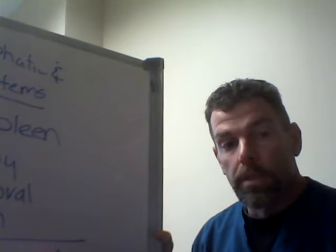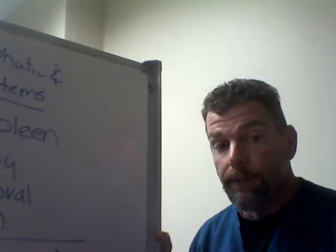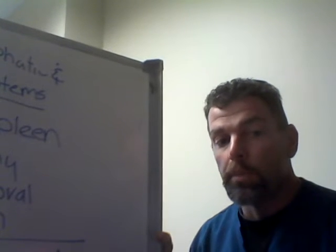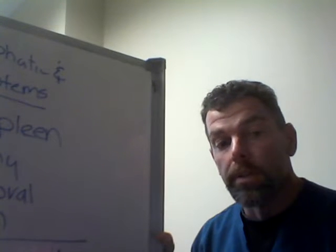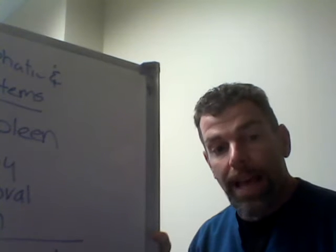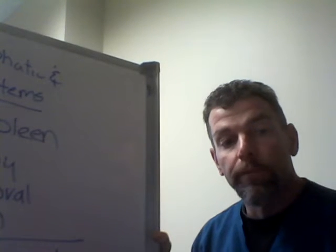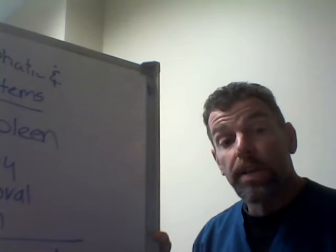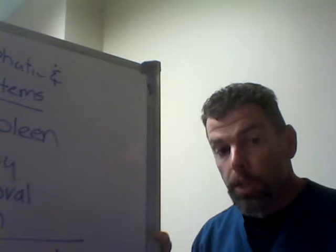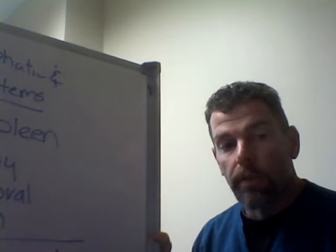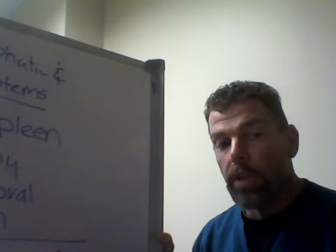The lymphatic and immune system is going to have two purposes. First, we have two sets of vessels in our body. Most people are familiar with the vessels of the cardiovascular system — the arteries, veins, and capillaries. However, most people don't realize that we have a second set of vessels in our body: the vessels of the lymphatic system. These vessels are going to be important because anything that is too large to be carried by the vessels of the cardiovascular system will in turn be picked up by the vessels of the lymphatic system.